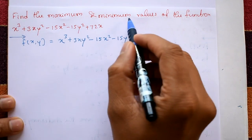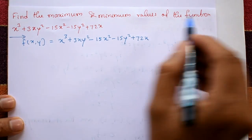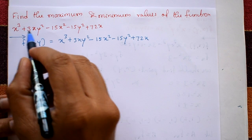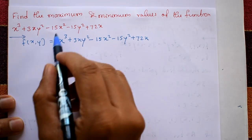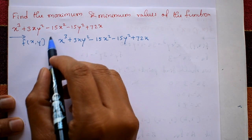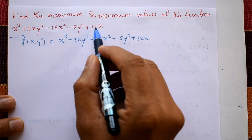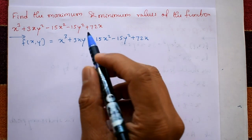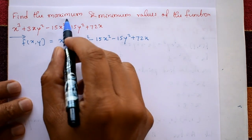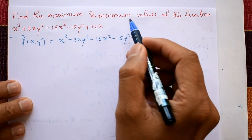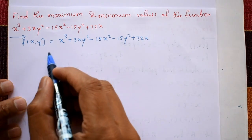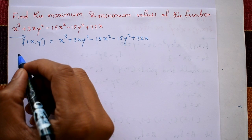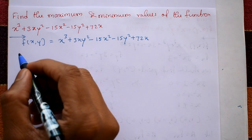Find the maximum and minimum values of the function f(x, y) = x³ + 3xy² - 15x² - 15y² + 72x.